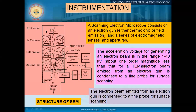Looking at the instrumentation, we use an electron gun, then we have different types of electromagnetic lenses which generally condense the electron beam. We use a high acceleration voltage to generate the electron beam. The electron beam emitted from the electron gun is condensed to a fine probe for surface scanning. With the help of different condenser lenses, we try to converge the electron beam to a very nanometer-scale probe diameter, which helps us obtain the surface features.